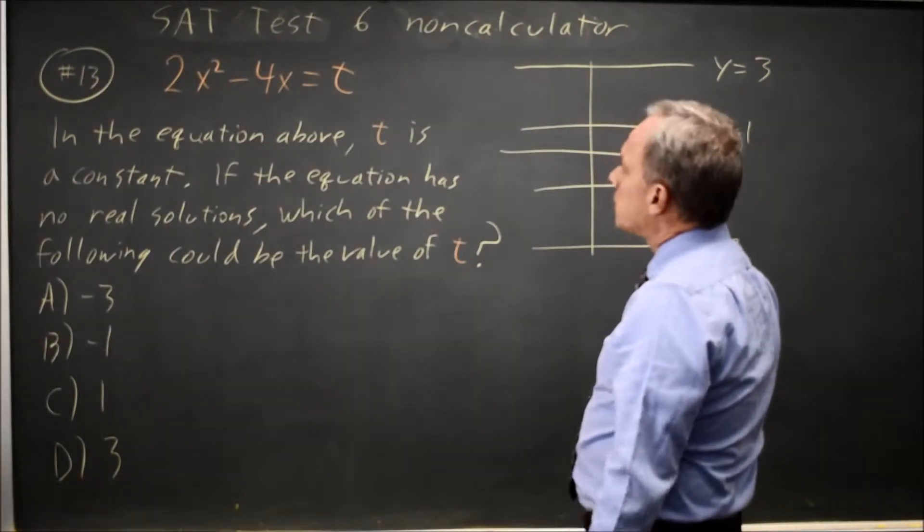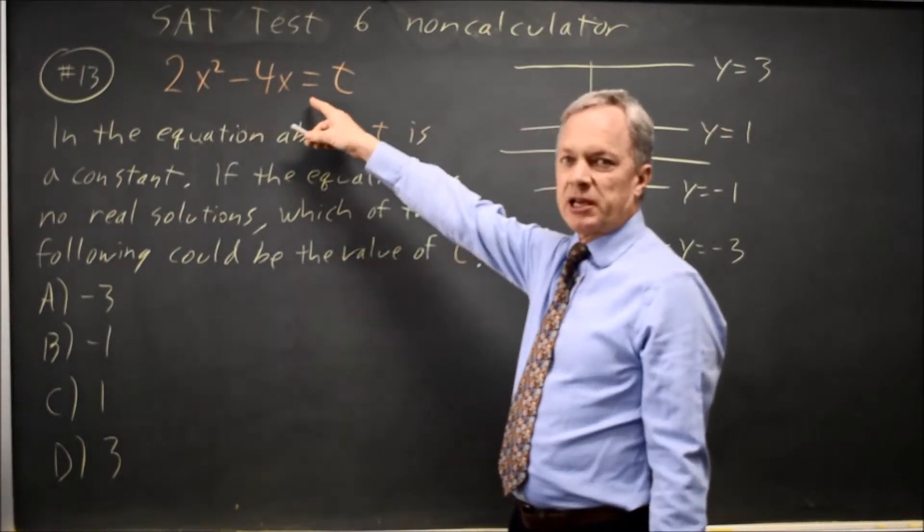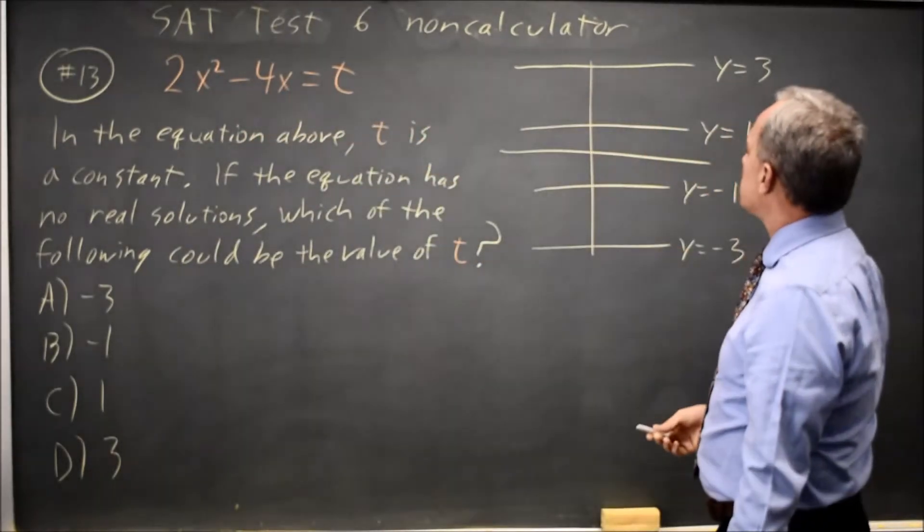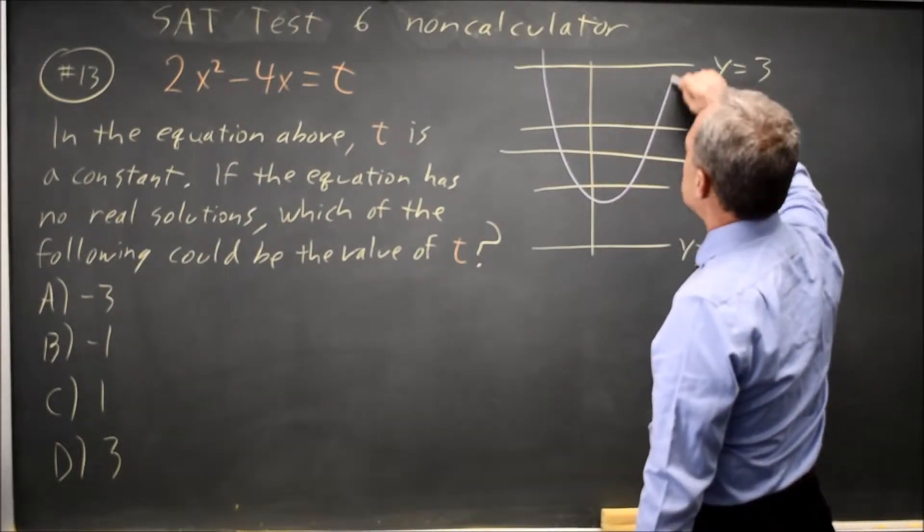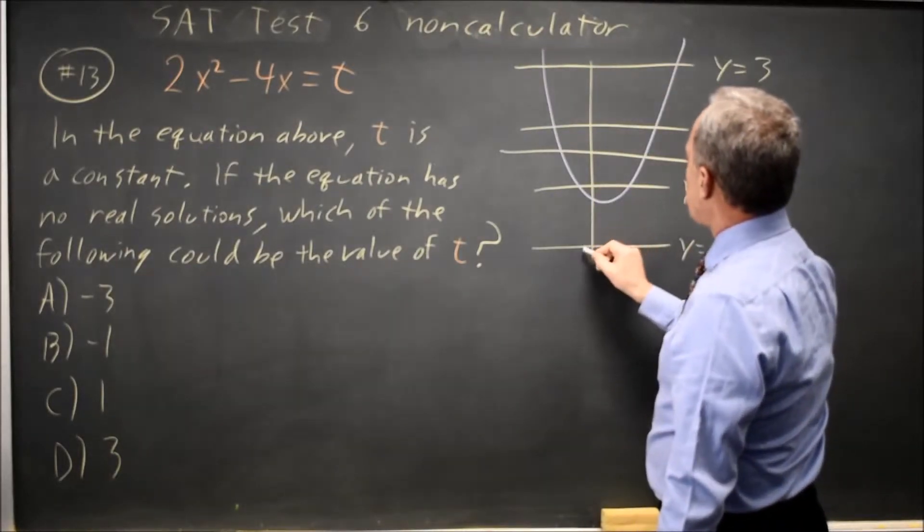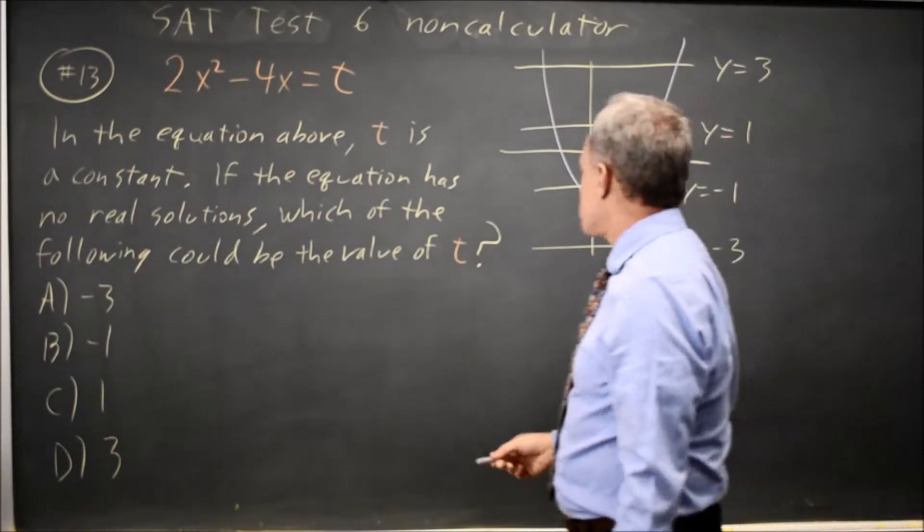If there is only one correct solution, then this parabola, which opens up, has to hit three of these four y values, which means it looks something like this, and the only y value it doesn't hit is y equals negative 3.